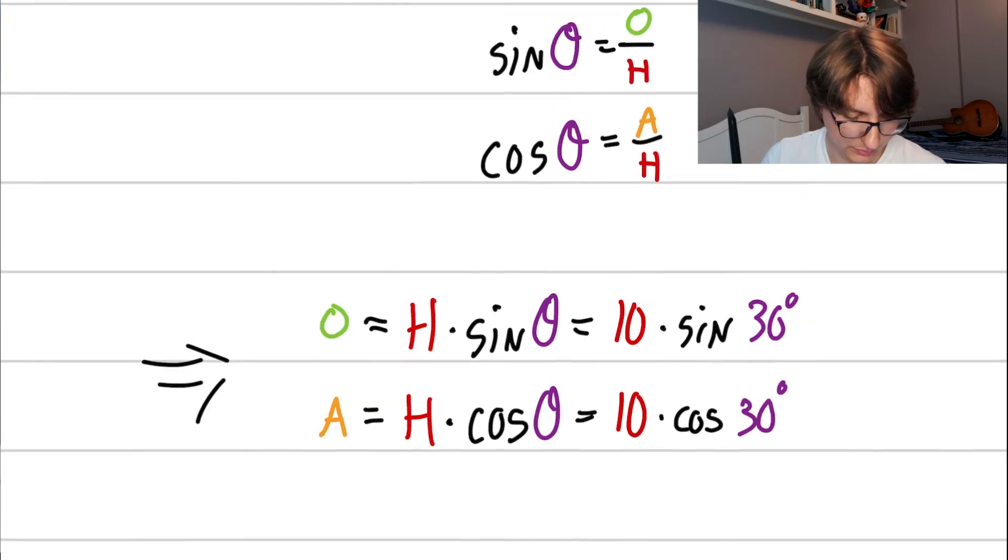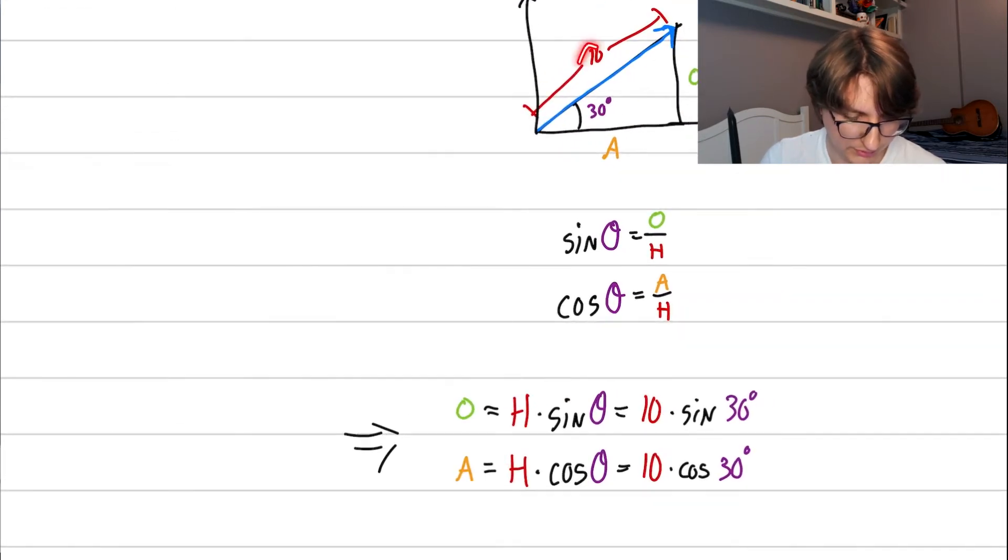So in this case, our hypotenuse was 10. So we look at our triangle, our hypotenuse was 10, and our angle was 30. We plug this in, and we get our answers directly. So this is something that's very general, and we often may need to do this in the beginning of a problem, but just know that this is something you may need to do.